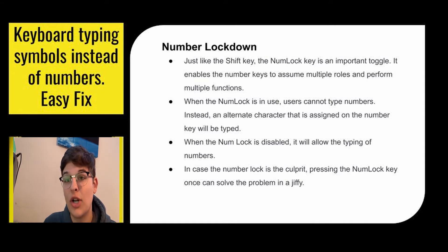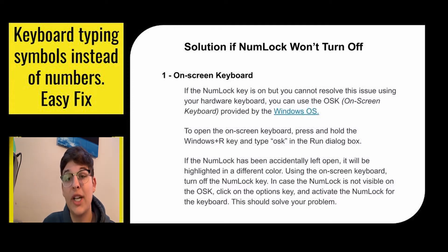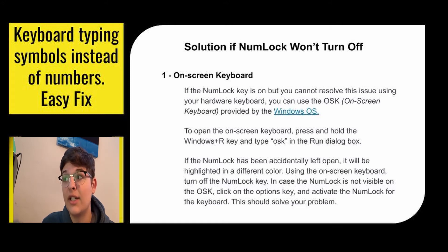If that doesn't work, there are a couple other options. You might want to use your on-screen keyboard, which is provided by your Windows OS. Hit the Windows key and the R key to get your Run dialog box, then type OSK. If number lock has accidentally been enabled, it will be highlighted in a different color on your OSK. Using the OSK, turn off your num lock key. If num lock is not available on the on-screen keyboard, click Options and then activate the number lock for the keyboard.